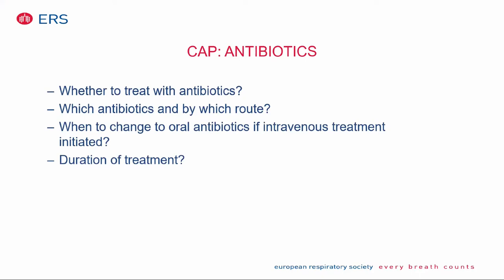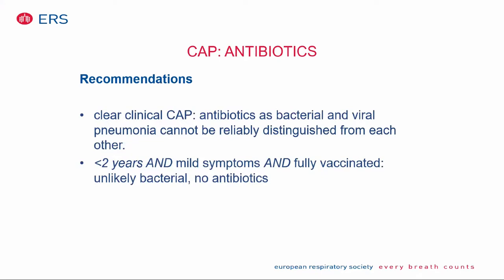Are we going to treat with antibiotics, and if so, which antibiotics and by which route? When can you switch IV to oral, and how long should we treat? These are recommendations from the BTS guidelines. If you have a clear clinical CAP based on fever and tachypnea, most children should be started on antibiotics because you can't distinguish bacterial from viral pneumonia based on clinical features, radiology, or even CRP in uncomplicated CAP. However, in children below the age of two with mild symptoms who are fully vaccinated, you could wait and see, because viral infections will be the cause in more than 80% of cases.